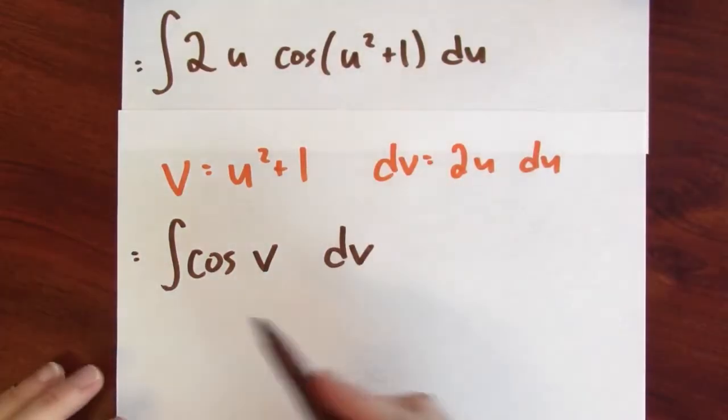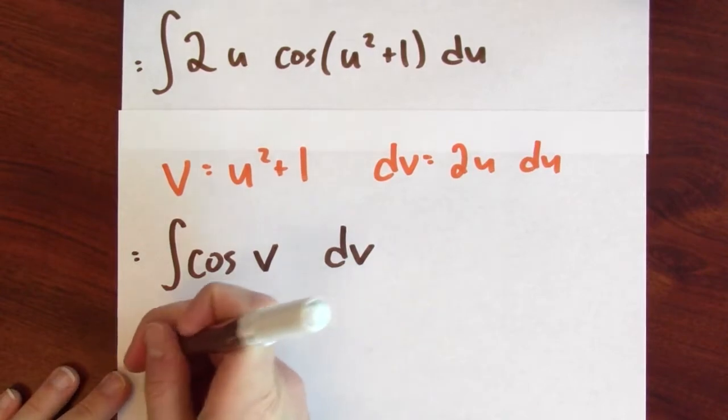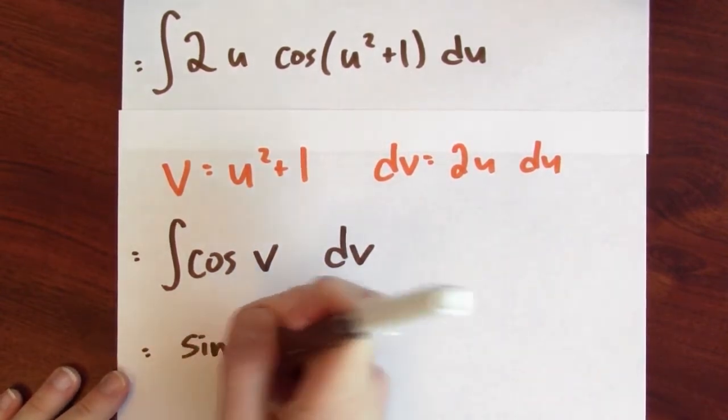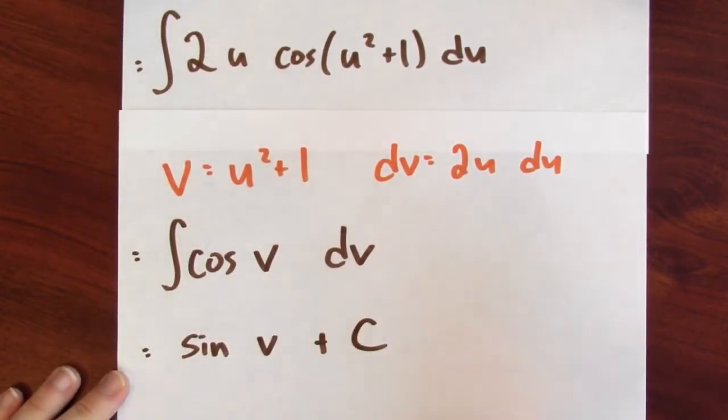Now I can anti-differentiate that, no problem. The anti-derivative of cosine v dv is just sine v, and I'll write plus c, because the derivative of sine v is cosine v with respect to v. But probably the grader is not going to be too impressed with me if I express my answer in terms of a substitution that I just made up. I shouldn't write down the answer in terms of v. I should be writing down the answer in terms of x.